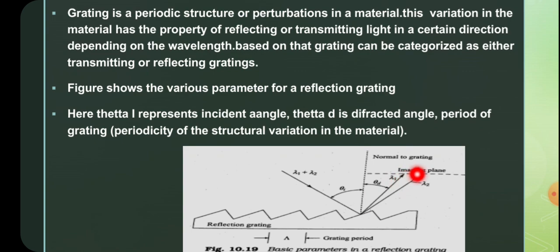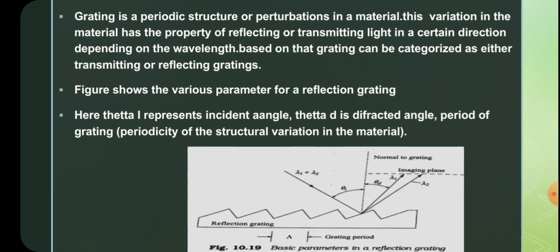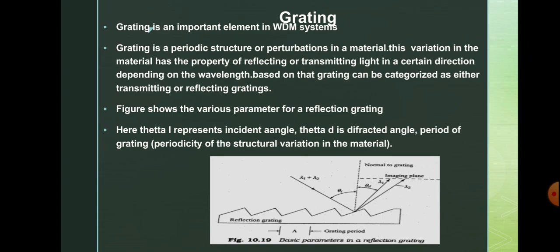So at the imaging plane, you will be getting individual wavelength components, lambda 1 and lambda 2. This is the basic thing that is occurring in the case of grating.